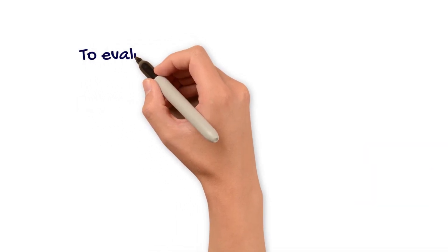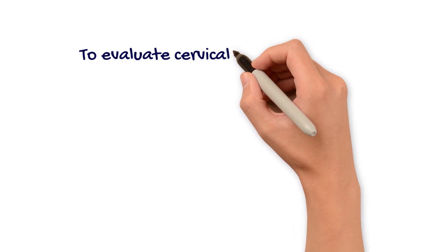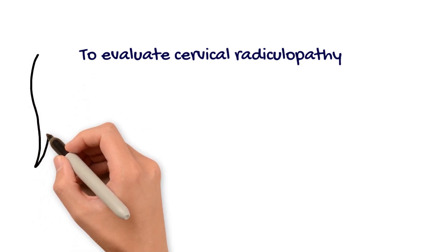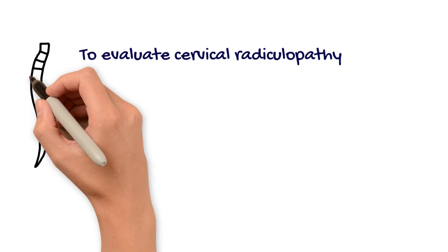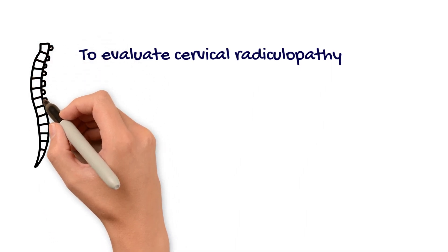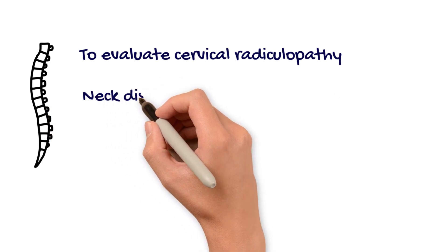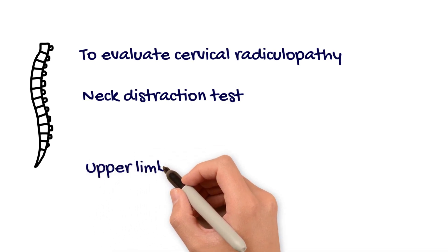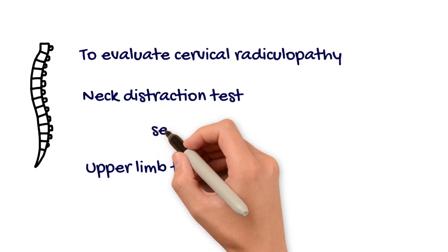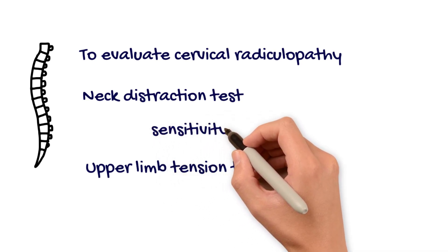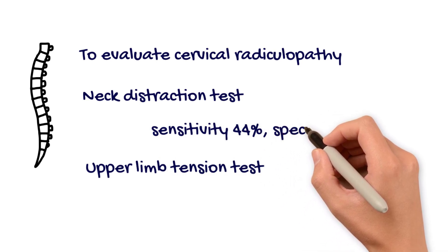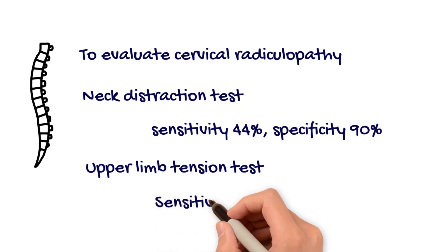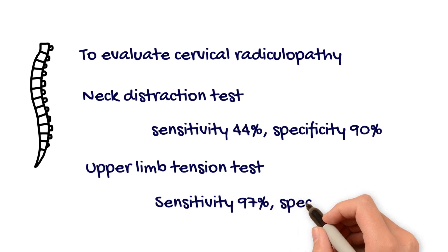Let's consider the diagnosis of cervical radiculopathy as an example. Cervical radiculopathy is not life-threatening and can be effectively managed. The commonly used tests to evaluate cervical radiculopathy include the neck distraction test and the upper limb tension test. A systematic review by Ruby Wilstein et al. reported the sensitivity and specificity of the two tests: neck distraction test — sensitivity 44%, specificity 90%; upper limb tension test — sensitivity 97%, specificity 22%.